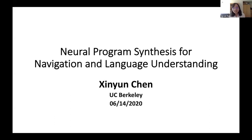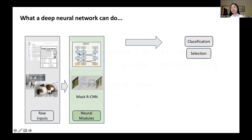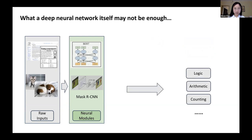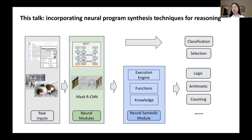Hi everyone. My name is Xing-Wing Chen. I'm a PhD student at UC Berkeley, working with Professor Zhang Song. It is my great honor to share my recent work about neural program synthesis with all of you. Nowadays, deep neural networks perform pretty well on standard classification and selection tasks, especially for image recognition and natural language applications. However, a deep neural network itself still cannot precisely perform numerical or logical reasoning. In this talk, I will discuss my work on leveraging symbolic programming synthesis techniques to empower the neural model with the capacity of computational reasoning.